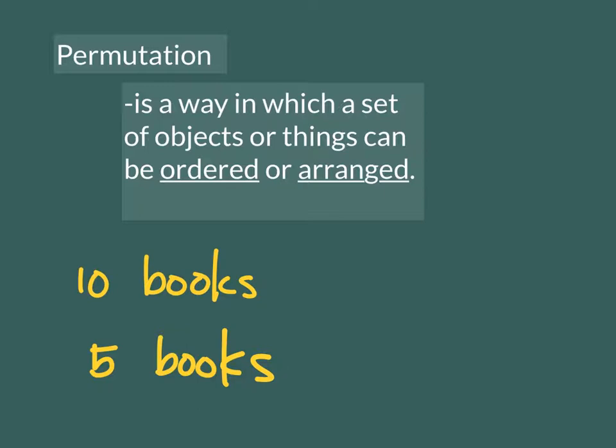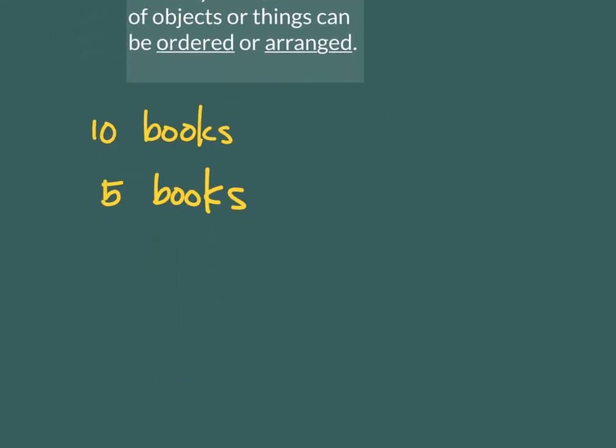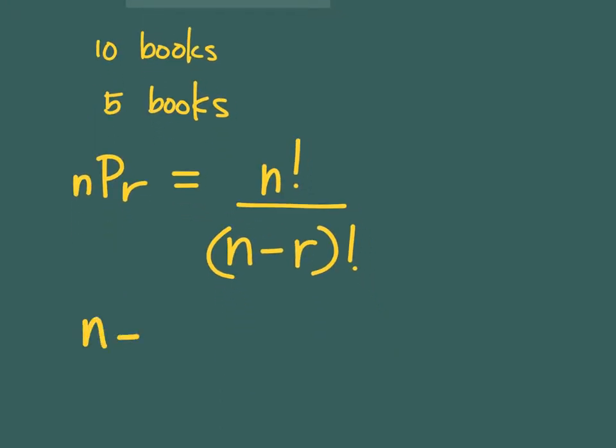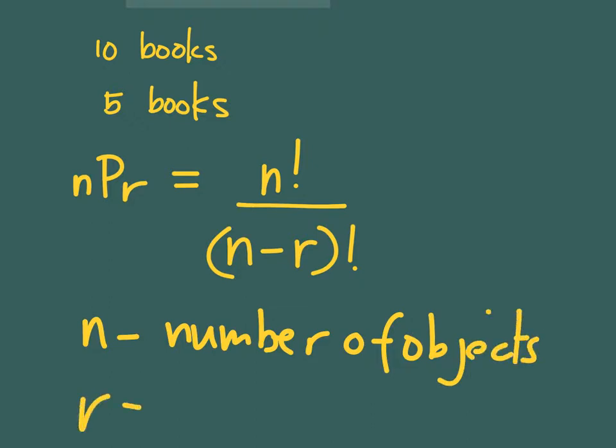To find the number of permutations, we use the formula nPr, which is N factorial over N minus R factorial, where N is the number of given objects and R is the number of places that you can put the books. In this case, R is equal to 5.